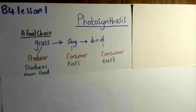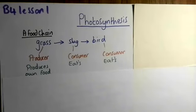So grass is a producer because it produces its own food. The slug is a consumer. The bird is a consumer because they both have to eat to gain their own food.